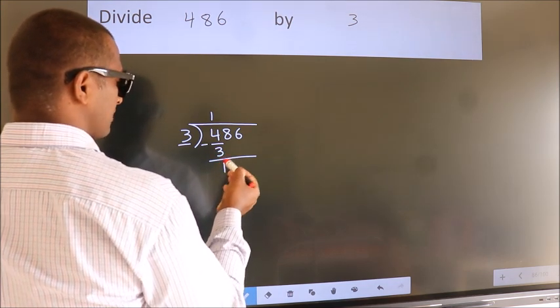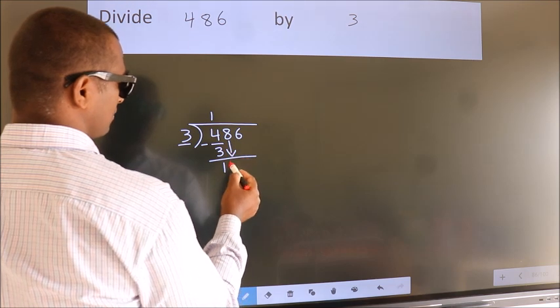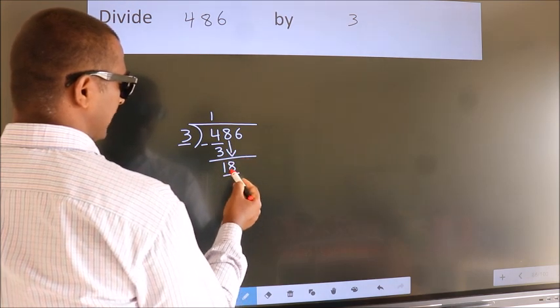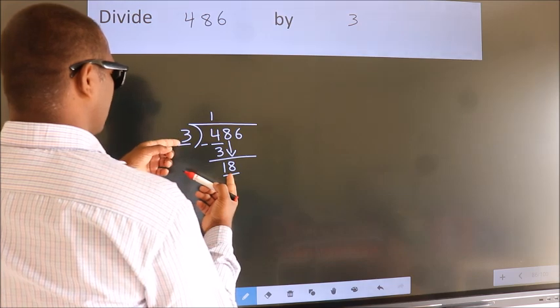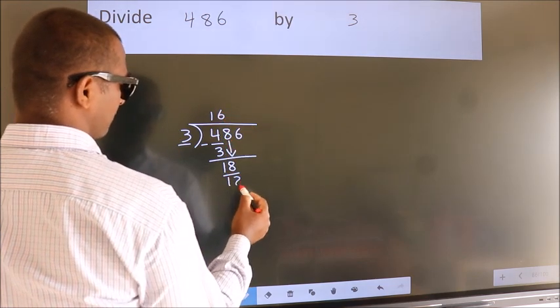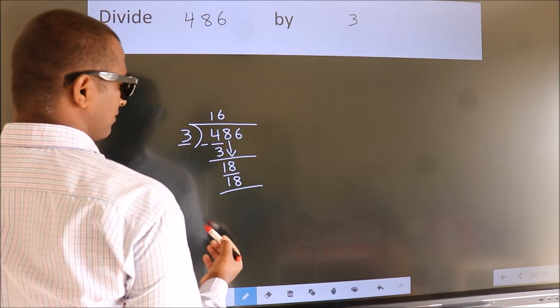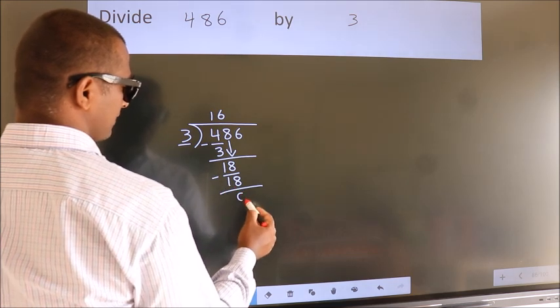After this bring down the beside number. So 8 down. So 18. When do we get 18 in 3 table? 3, 6, 18. Now we subtract. We get 0.